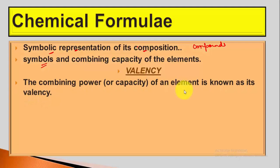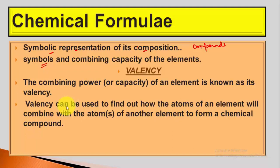What is the combining power and capacity of an element known as? Its valency. What is the combining power? How many atoms in one element combine with atoms of another element? Valency can be used to find out how the atoms of an element will combine with the atoms of another element to form a chemical compound. We can understand this from valency.